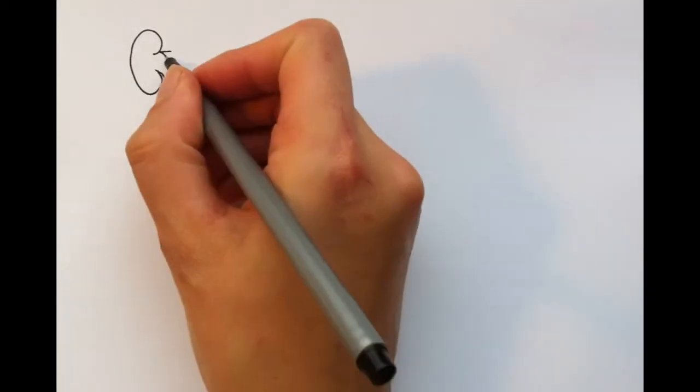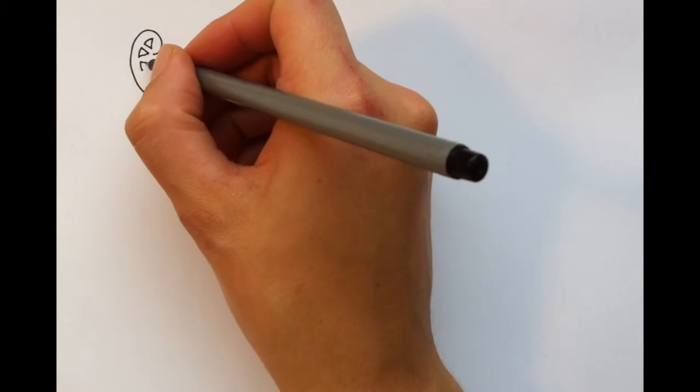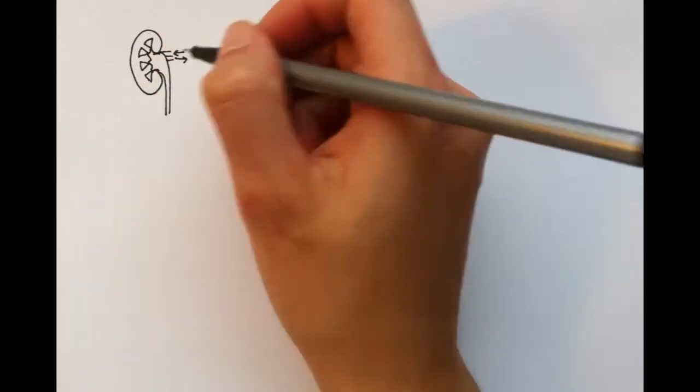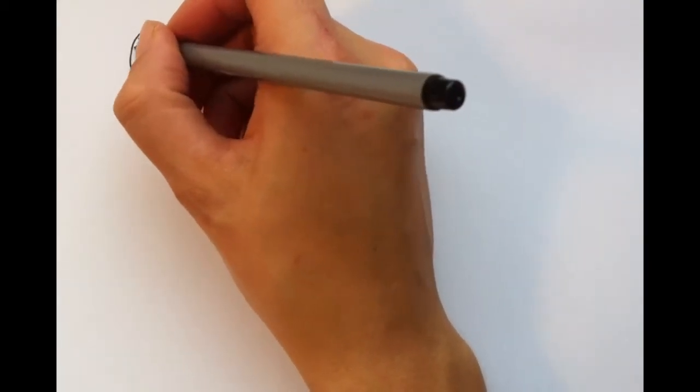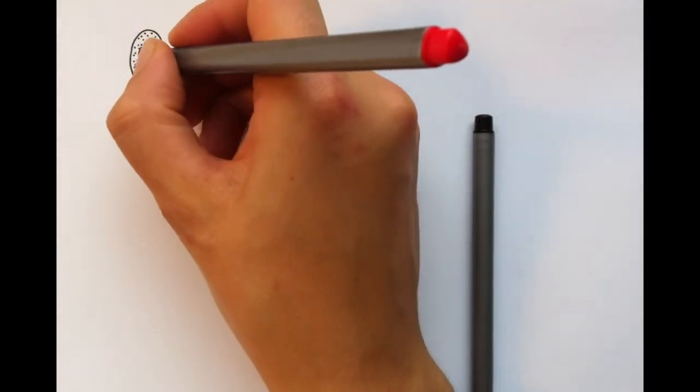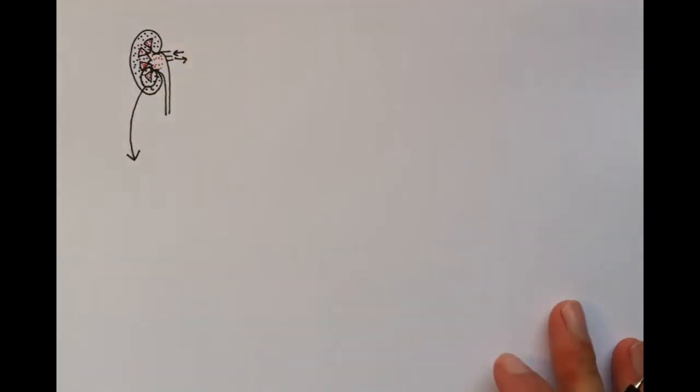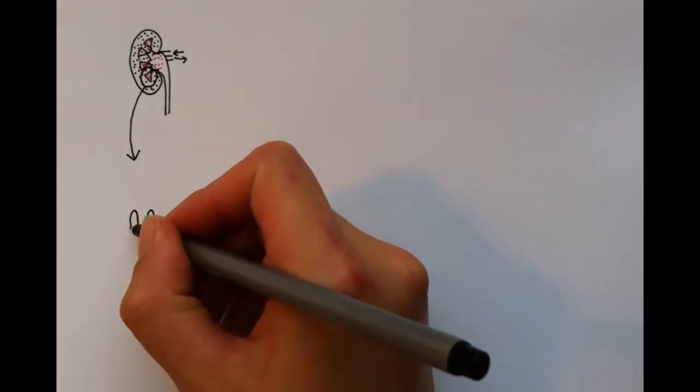I'm going to go through the parenchyma of the kidney now. That's the functional tissue of the organ. The parenchyma consists of an outer cortex and an inner medulla. The cortex seen here with little dots, and the medulla in red. To understand the layout of the kidney, it's important to get an overview of the filtering apparatus of the kidneys, the nephron.